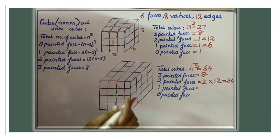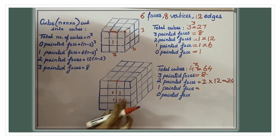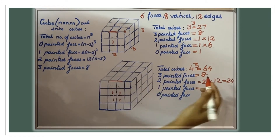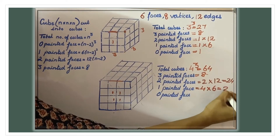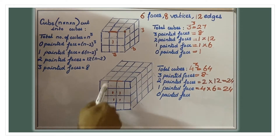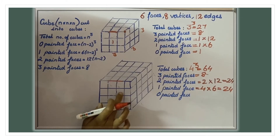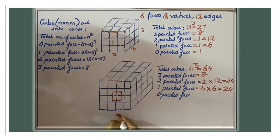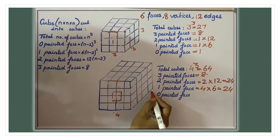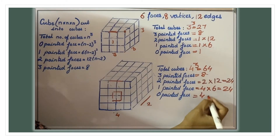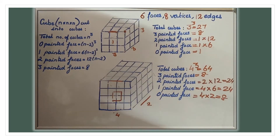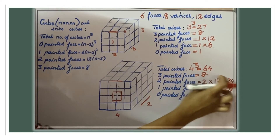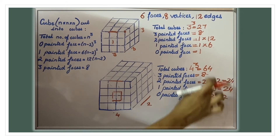For single-face-painted cubes in the four by four cube, take any one face. In one face, four cubes are single-face painted. A cube has six faces, so four into six equals twenty-four cubes are single-face painted. For zero-face-painted cubes, look at the middle layer — leave the outer layers and take the middle. There are four cubes in the middle layer of one face, and two middle layers, so four into two equals eight cubes are zero face painted. Adding eight plus twenty-four plus twenty-four plus eight equals sixty-four — the total cubes.